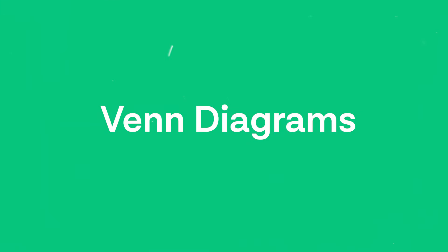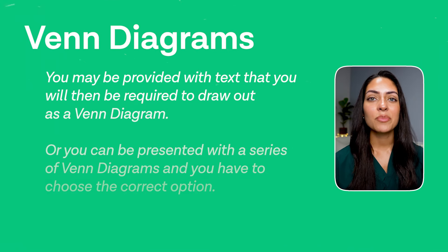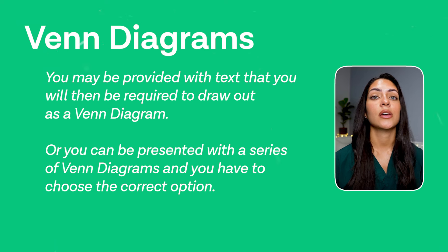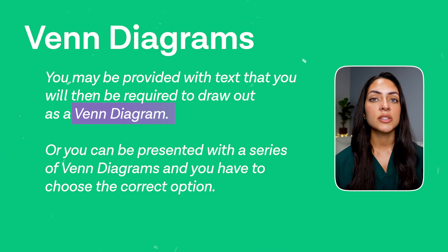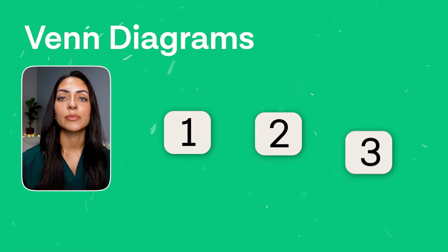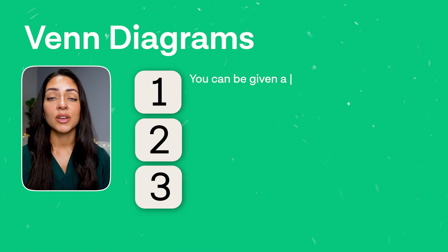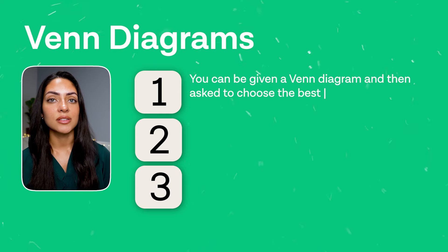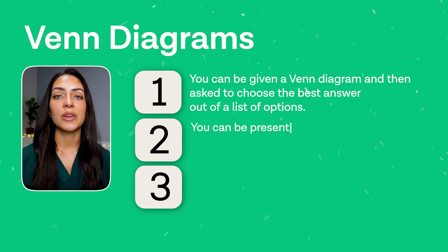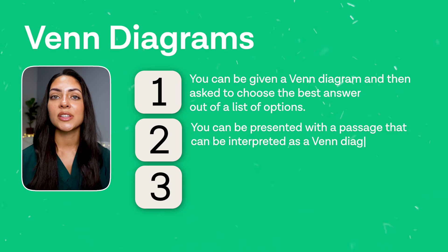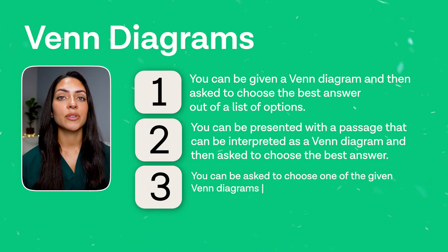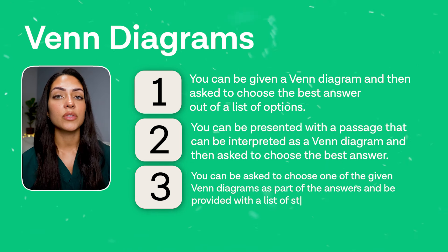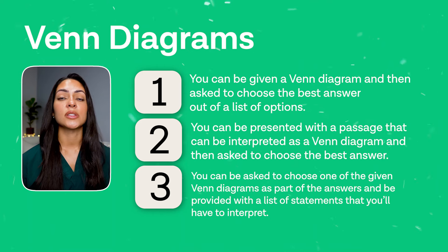The fifth question type is Venn diagrams. For this type of question you may be presented with text that you'll be required to draw out as a Venn diagram, or you could be presented with a series of Venn diagrams and have to choose the correct option. There are three subtypes: you can be given a Venn diagram and asked to choose the best answer from a list of options; you could be presented with a passage that can be interpreted as a Venn diagram and then asked to choose the best answer; or you could be asked to choose one of the Venn diagrams and be provided with a list of statements to interpret.